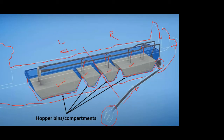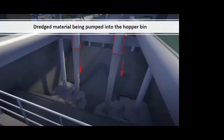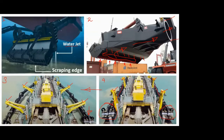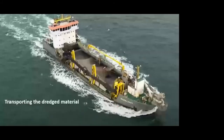These bins hold the dredged material until we reach the destination. The dredger is essentially a type of ship, so once the dredging or excavation part is completed, the drag head and suction pipe are lifted using the winch and hoist assembly, rested at the sides of the ship, and then the ship moves to its destination.